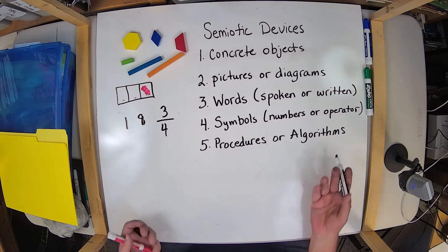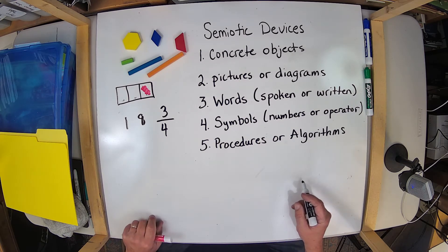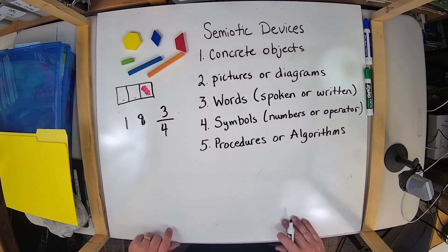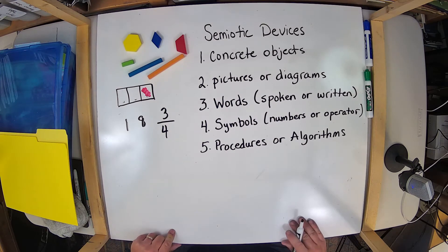Procedures and algorithms. There are ways that we approach making meaning out of mathematical symbols. And those procedures and those algorithms help us make meaning.